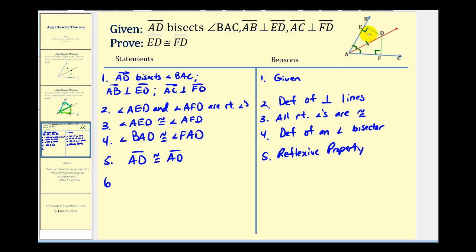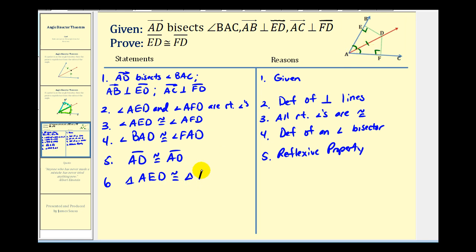Now we know that these two triangles are congruent. Being careful to state them in corresponding order: triangle AED is congruent to triangle AFD. The reason for this is Angle Angle Side Congruence.